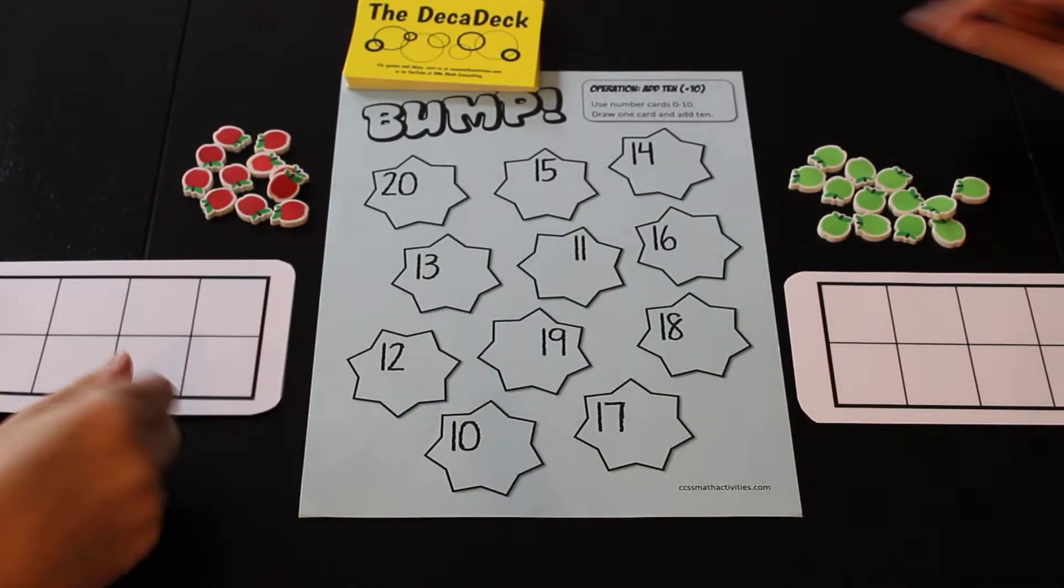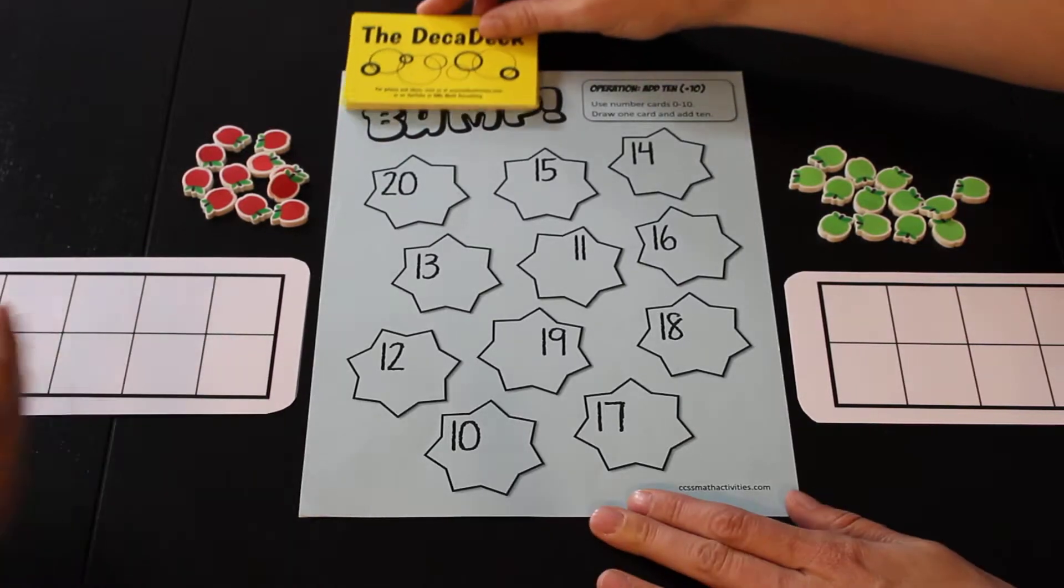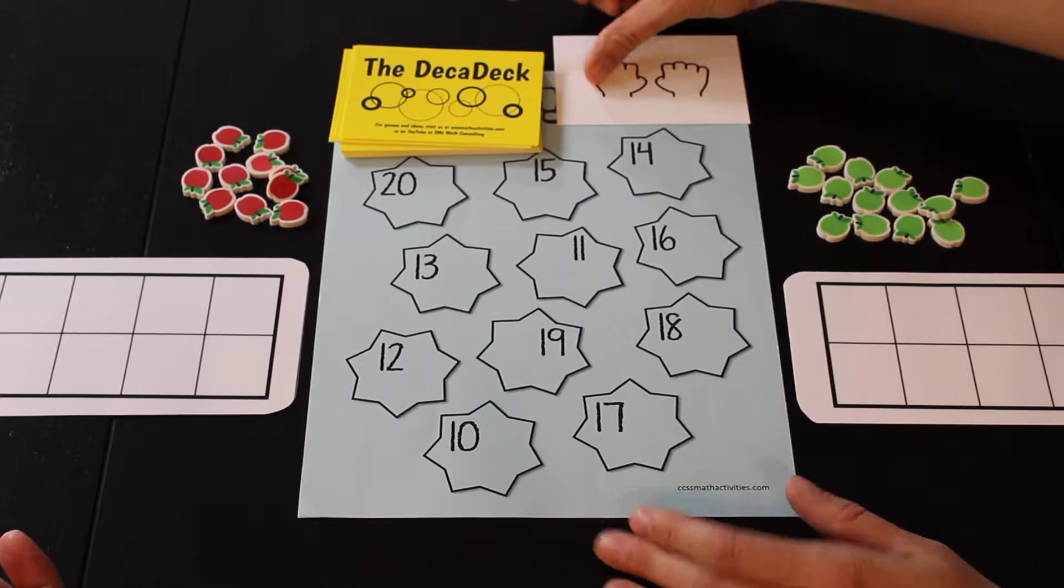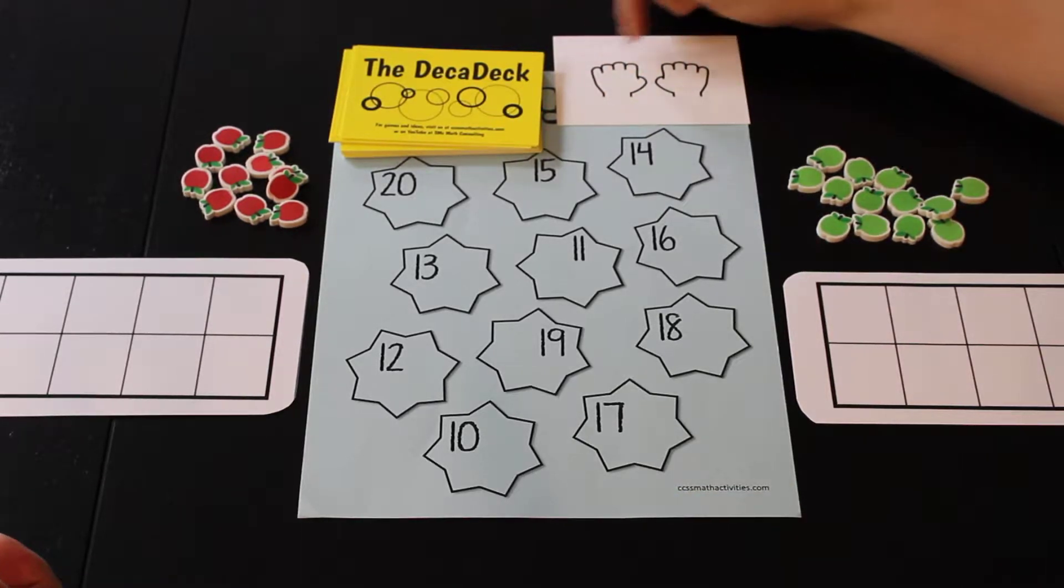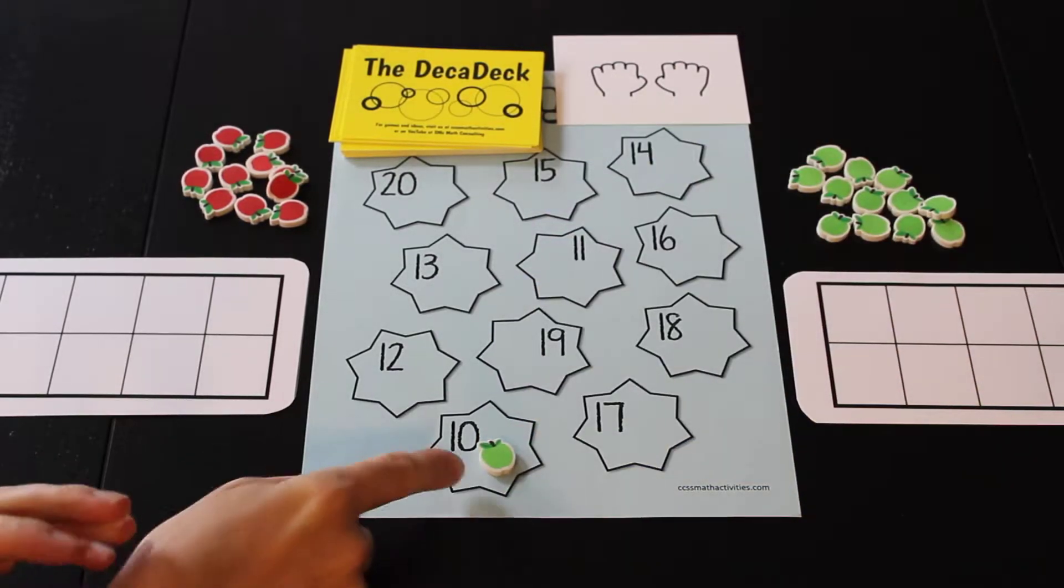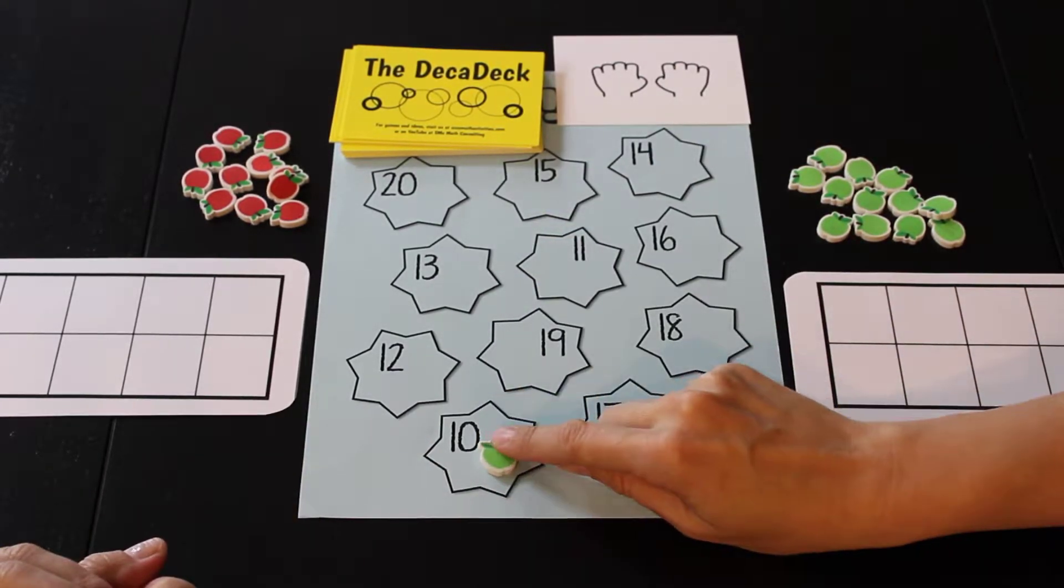Alright, okay, so I'll go first. I'm gonna take the first card off the deck and turn it over. And since this is Add 10, I'm gonna add this many to 10. Oh, zero! Zero plus 10 is 10. And you put your marker on the 10. I put it off to the side. I didn't want to hide it, right? We don't want to cover it up.